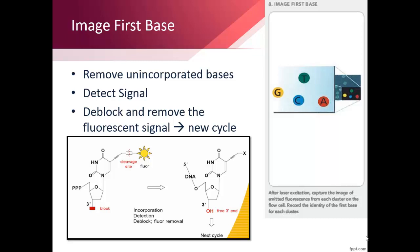After that, the block on the newly added bases' three prime part of the sugar is removed so that another base can be added by the polymerase. The fluorescent is also removed so that only the new base's fluorescent is detected in the new cycle.